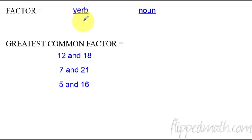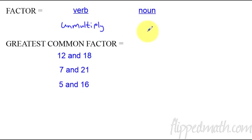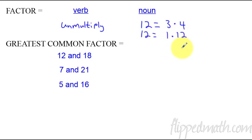Factoring is both a verb and a noun. It's a verb because it's an action — it's the same thing as unmultiplying or undistributing. It's also a noun because you can refer to what are the factors of something. For example, 12 is the same as 3 times 4, or 1 times 12. 3 is a factor of 12 because it divides in evenly, and 4 is also a factor of 12. So don't be confused — factoring involves both verbs and nouns.